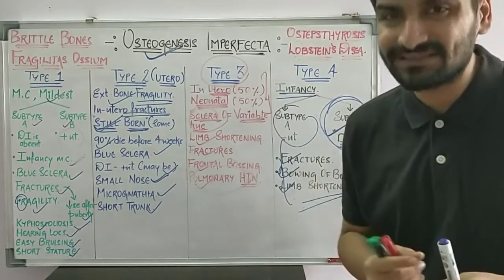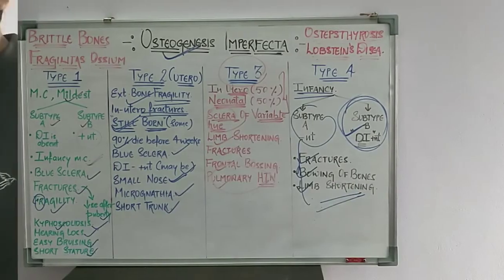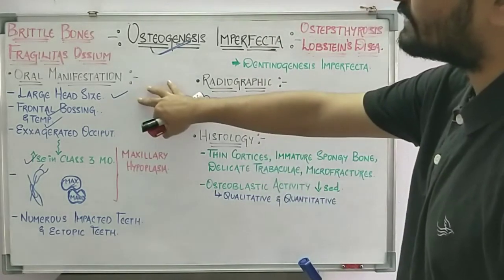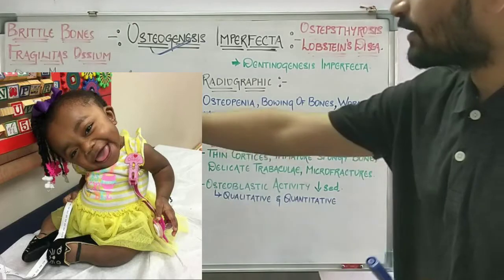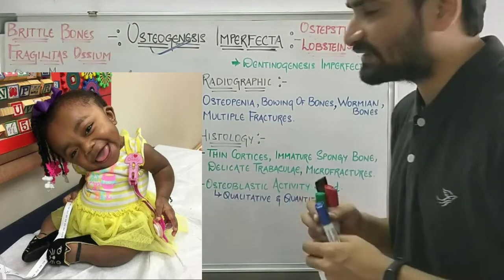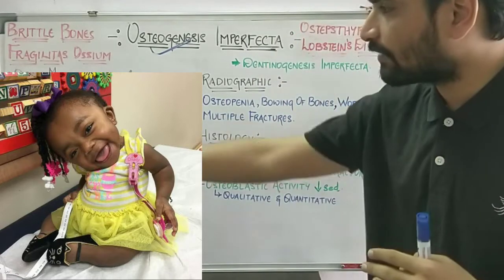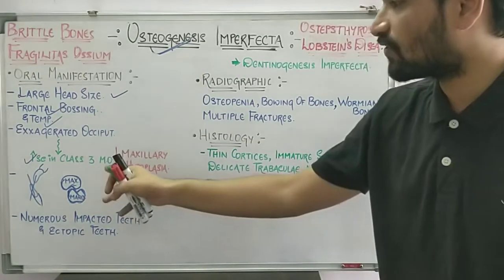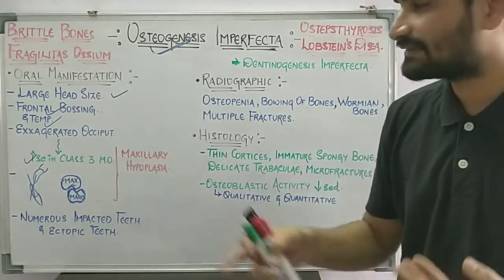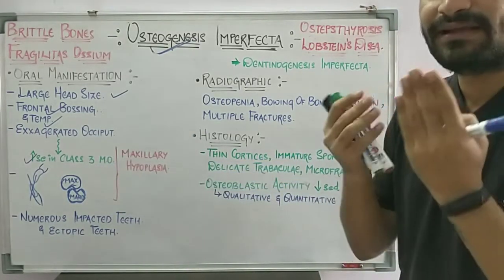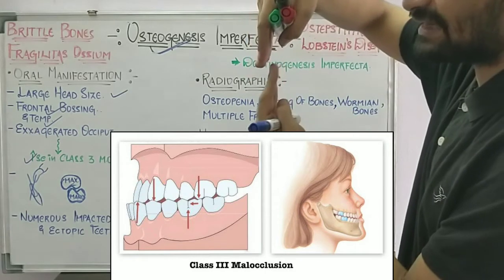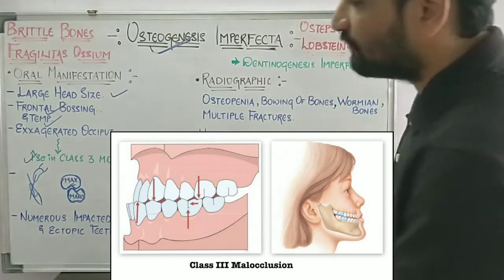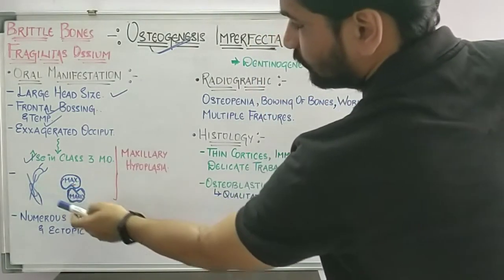Moving on to the oral manifestations of osteogenesis imperfecta: there is a large head size due to frontal, temporal, and occipital bossing — exaggerated outward growth of these bones. This leads to an increased incidence of Class 3 malocclusion, where instead of the maxilla being slightly in front, the mandible comes forward.